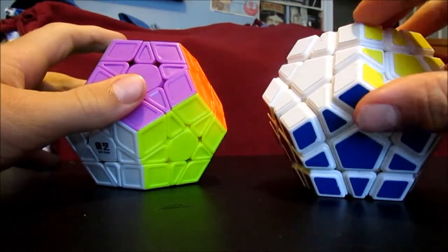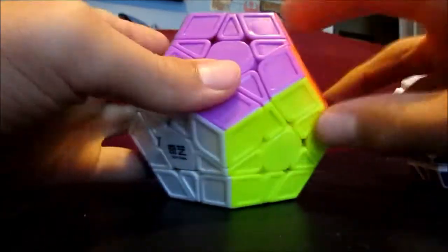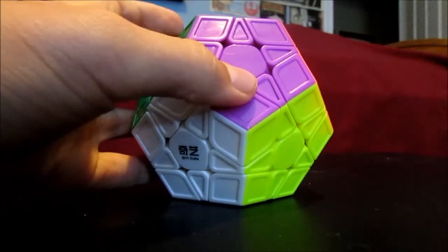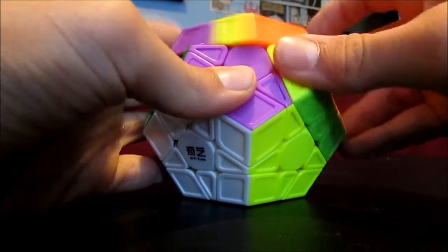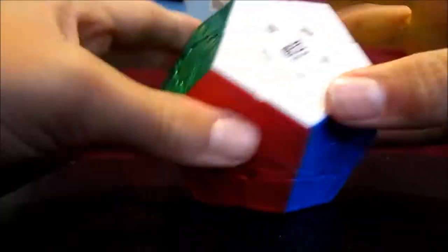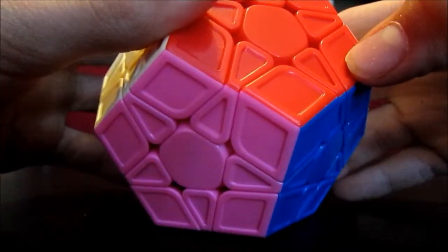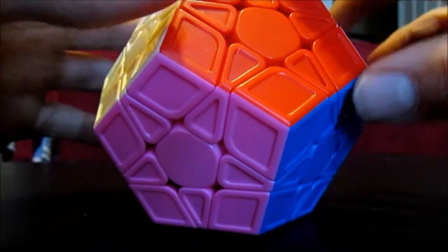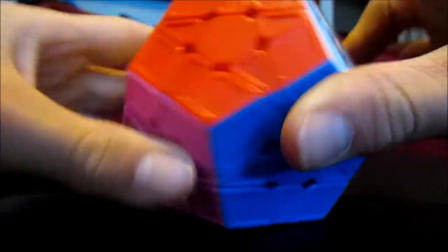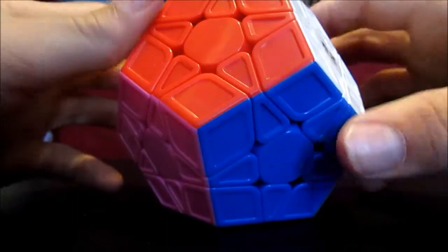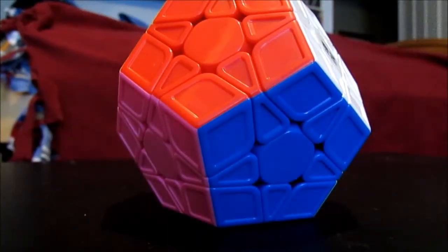Most likely because it's stickerless. And the QiYi Qiheng S Megaminx, the reason there's an S is just because it's stickerless. And that's really all. I think the sculpted pieces make the Megaminx look much more professional. And I think I could compare it to an X-Man Galaxy sculpted or non-sculpted, and it would be very similar since X-Man is a sub-brand of QiYi.